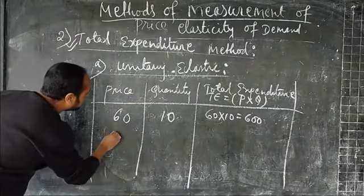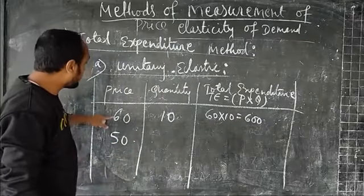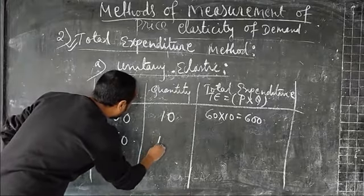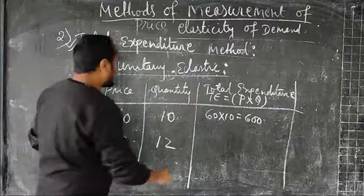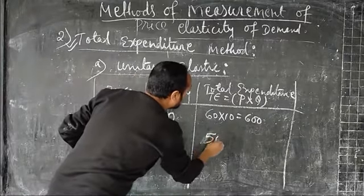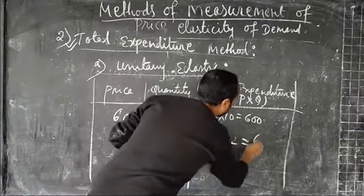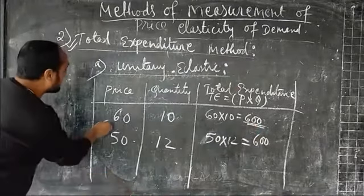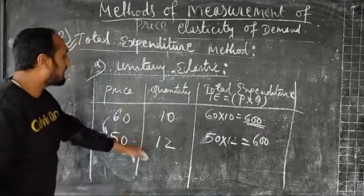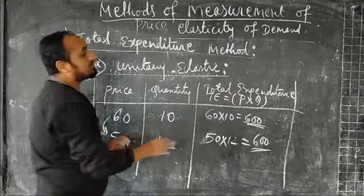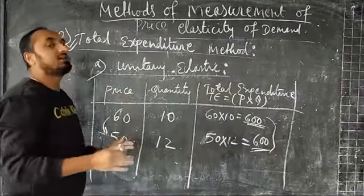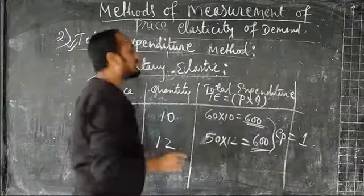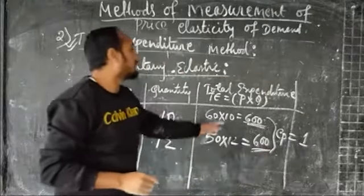Total expenditure = 60 × 10 = 600. Now if the price falls from 60 to 50, and due to this fall in price quantity demanded increases from 10 to 12, the total expenditure will be 50 × 12 = 600. So before the change in price, total expenditure is 600, and after the change in price from 60 to 50, with quantity demand increasing from 10 to 12, total expenditure is still 600. Since total expenditure does not change, EP equals 1 — this is unitary elastic.